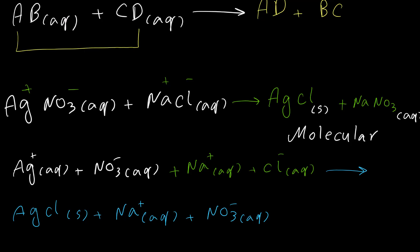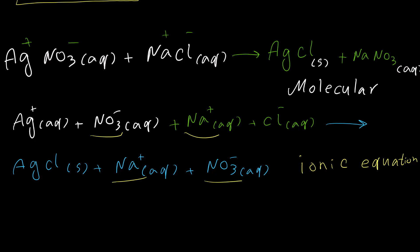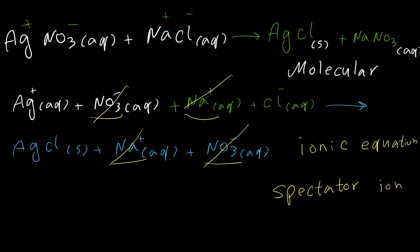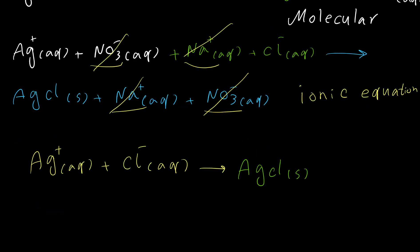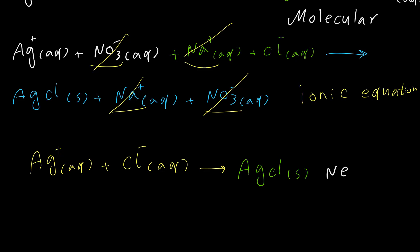This equation is the complete ionic equation. As you can see, there are some ions on the left side and right side that don't have any direct role in the reaction. These ions we call spectator ions, and we can cancel them out. The remaining equation is just the silver cation and chloride, and the product is silver chloride. This is the net ionic equation and it represents the actual reaction happening when we mix these two solutions.